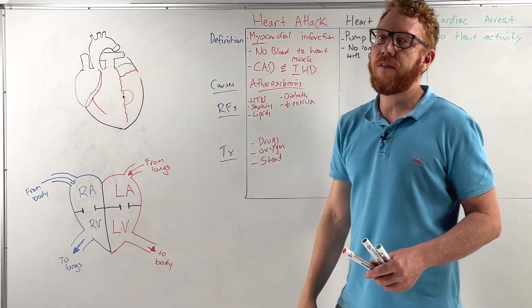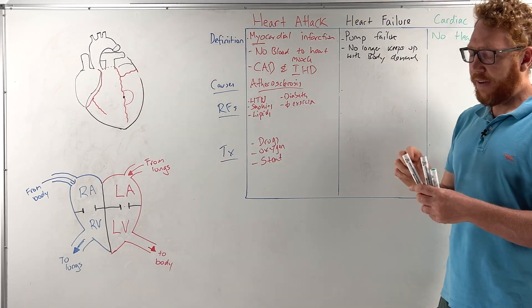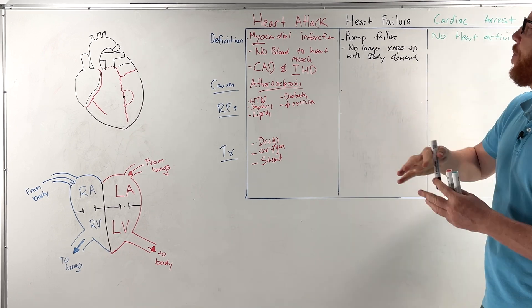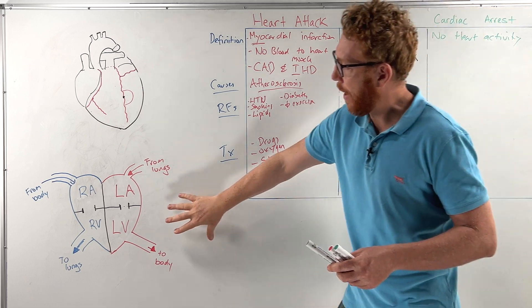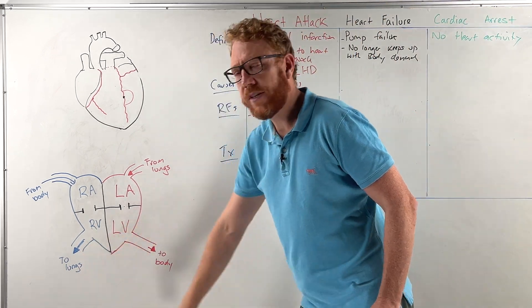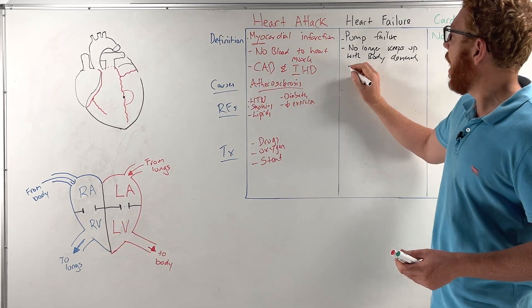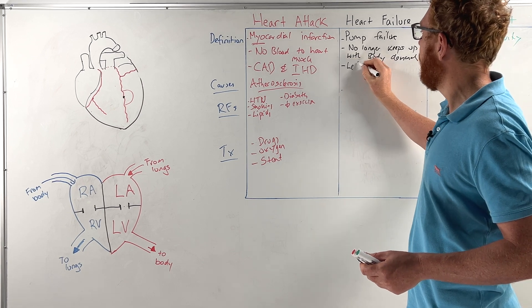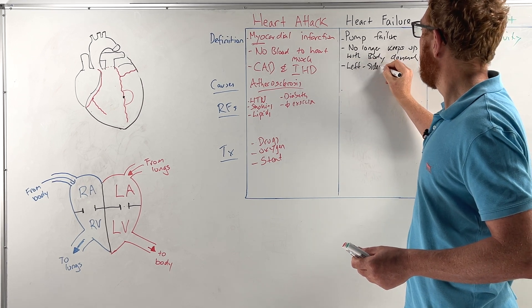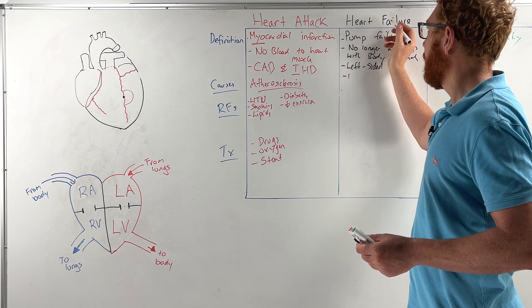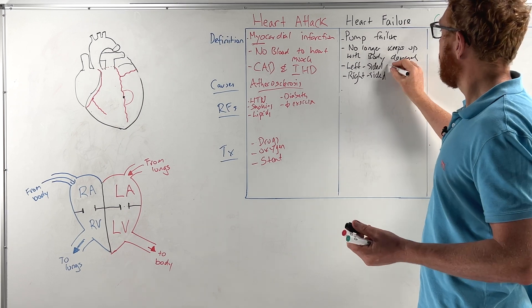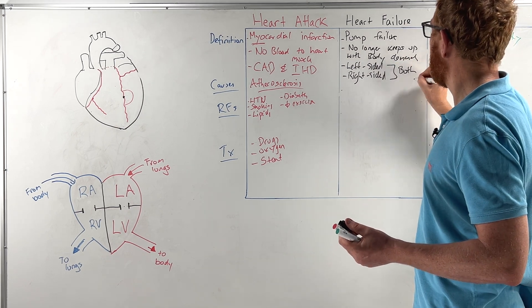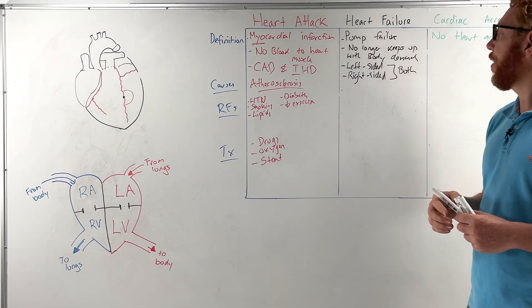When we look at heart failure, heart failure as we've said it's more to do with the pump of the heart. There's pumps going to the body, pumps going to the lungs. So we can actually have heart failure that is left-sided and pump failure or heart failure that is right-sided and both. We can have both ventricles being in heart failure.